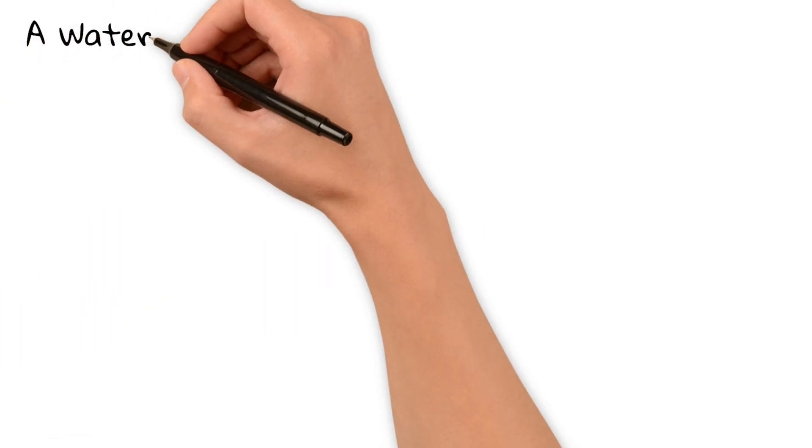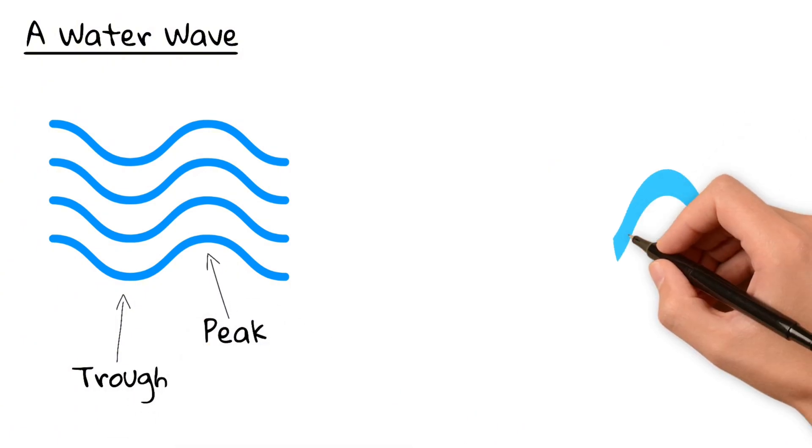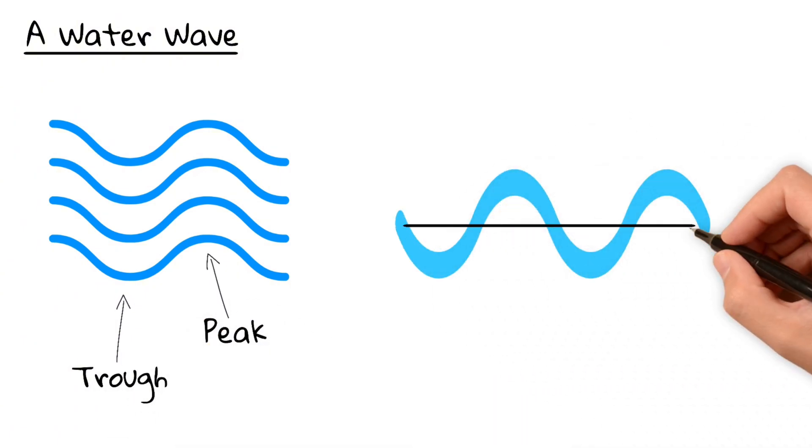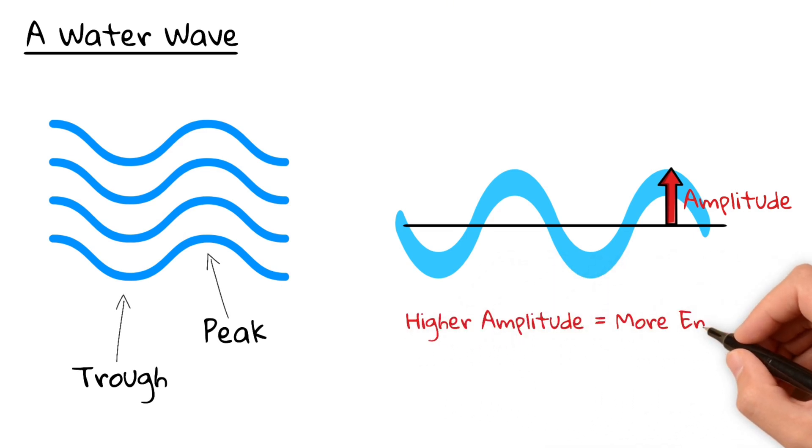Let's begin by looking at a water wave. When a wave passes by, it has peaks and troughs. The amplitude is the distance from the calm water level to the peak of the wave. It's a measure of how much energy the wave carries. The higher the amplitude, the more energy it has.